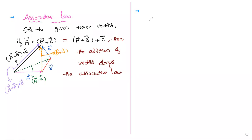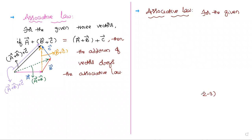Now we check whether subtraction of vectors also obeys the associative law or not. This time I am taking not addition but subtraction. Is it possible? Check: 2 minus 3 minus 4 — is it equal to 2 minus 3 minus 4 grouped differently? 2 minus 3 is minus 1, then minus 1 minus 4 is minus 5. But grouping the other way gives a different answer. So the scalars themselves are not obeying the associative law for subtraction.